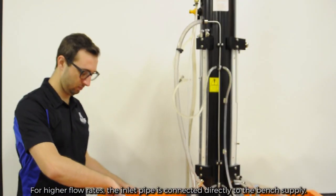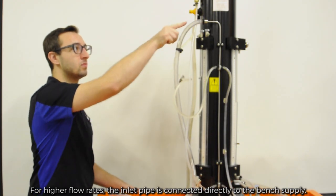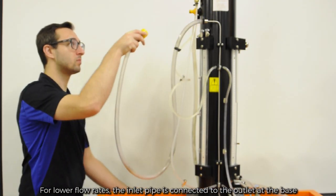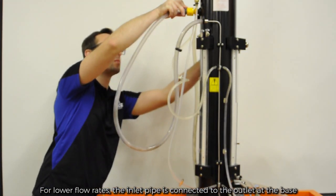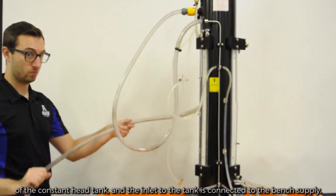For higher flow rates, the inlet pipe is connected directly to the bench supply. For lower flow rates, the inlet pipe is connected to the outlet at the base of the constant head tank and the inlet to the tank is connected to the bench supply.